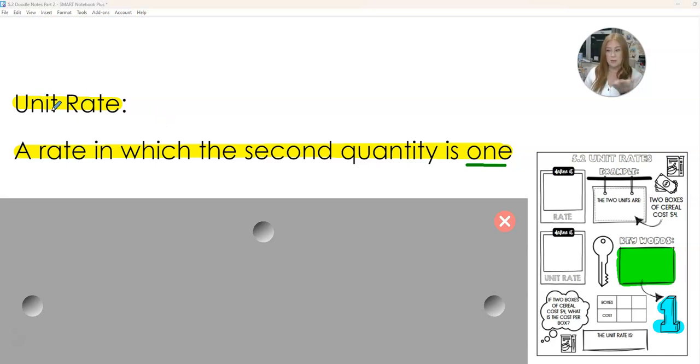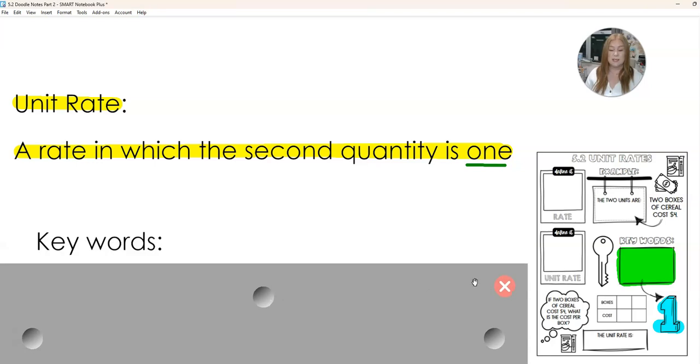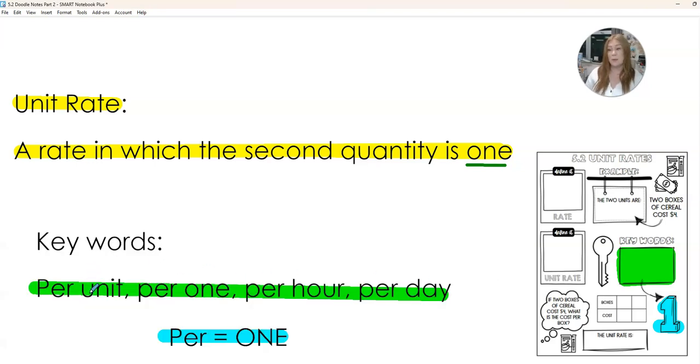When we're asking about a unit rate, we want to know how much is one of these, how far did they go in one of these. So some keywords to notice are per unit, how much per unit, how much per one, how much per hour, how much per day. Every time you see per, that equals one.